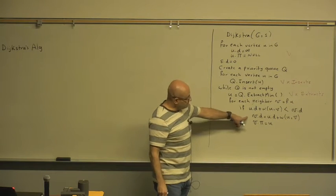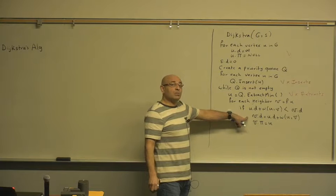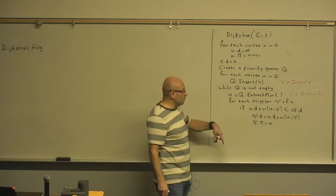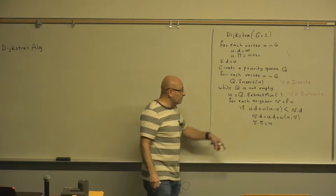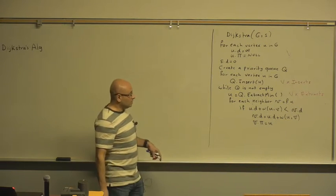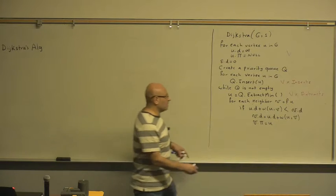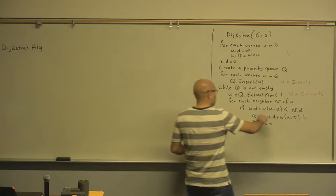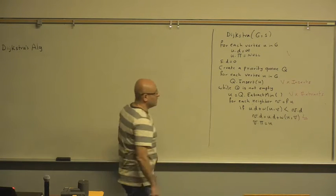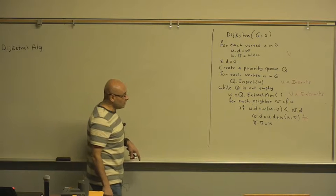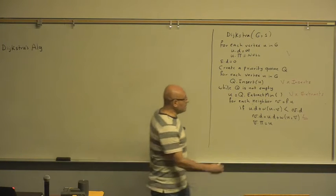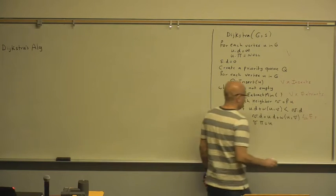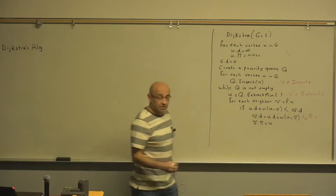And this is an E loop — so this is within an E loop, even though it's conditional. Because it's conditional, we should say less than or equal. The number of executions of this is less than or equal to E times the number of decrease-key operations.